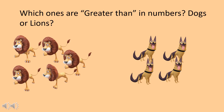Now answer this: which ones are greater than in numbers, the dogs or the lions? The answer is the lions are greater than the dogs, because the lions are five and the dogs are four, and five is greater than four.